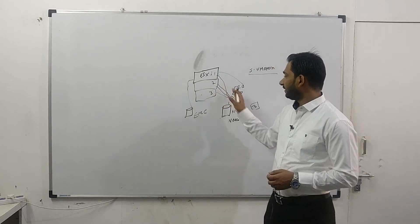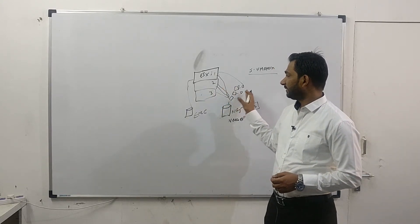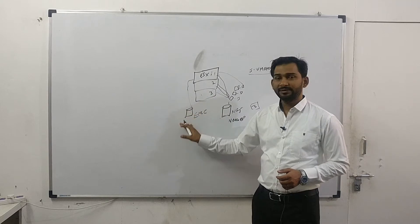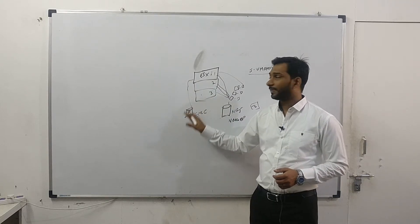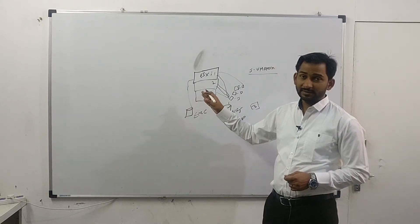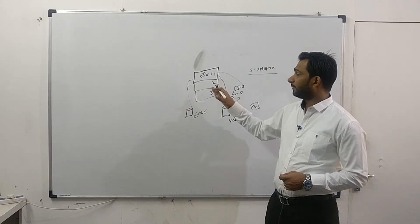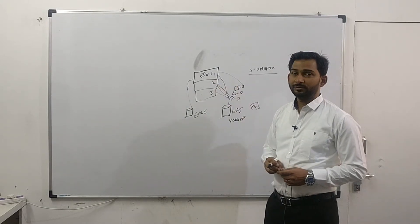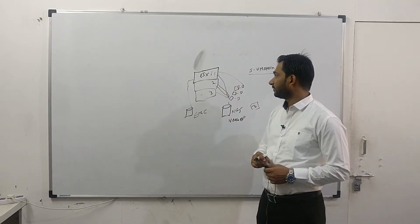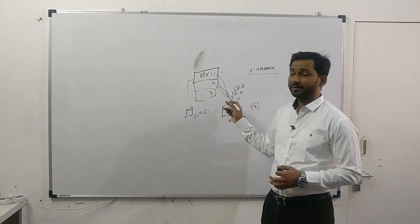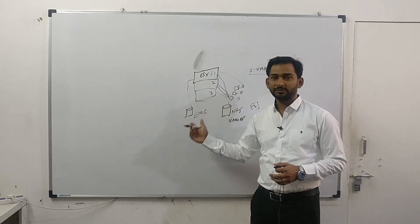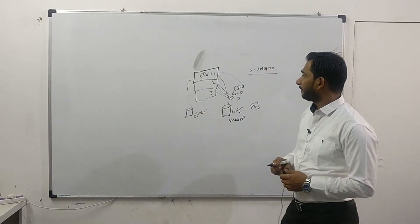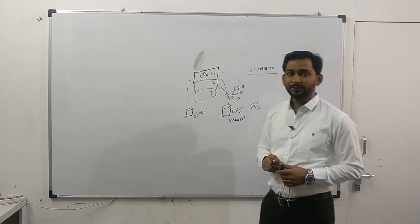You already have connectivity with your existing storage. You establish additional connectivity with the new storage, which will remain in place going forward, and then you use storage vMotion to migrate all virtual machine workloads from the old storage to the new storage.